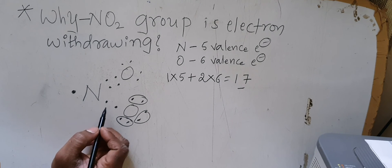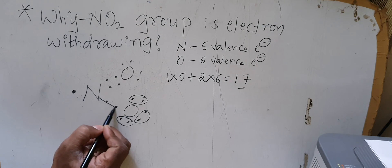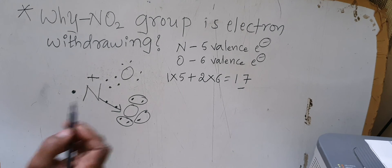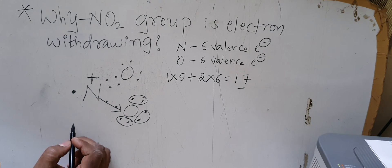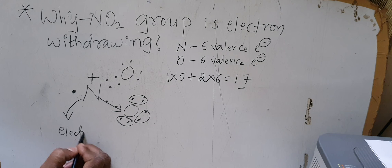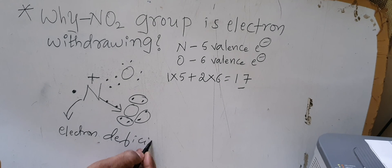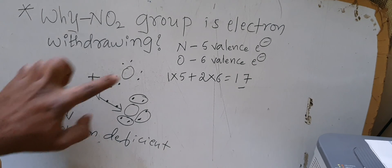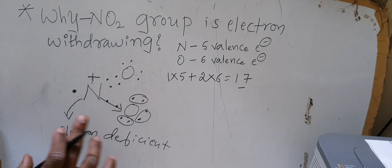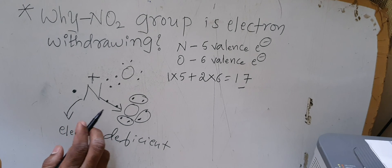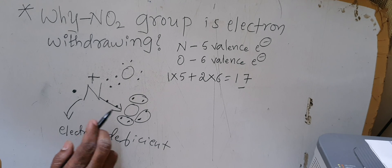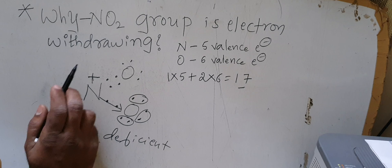The lone pair on nitrogen has been used up for bonding with the oxygen atom — it forms a coordinate bond with that oxygen. Because nitrogen has donated its lone pair to form this coordinate bond, nitrogen becomes electron deficient and acquires a positive charge. This electron deficiency of the nitrogen atom is what makes the nitro group electron withdrawing. There are no lone pairs remaining on nitrogen; those lone pairs have been used to form the coordinate bond with one of the two oxygen atoms.